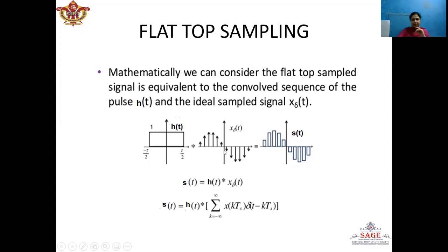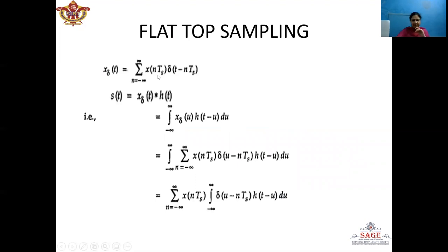Here the amplitude of the impulses varies according to the message signal. So X_delta(T) is known as the instantaneous sample signal or ideal sample signal. This ideal sample signal can be represented by the summation from N equals minus infinity to infinity of X(N·T_S) · delta(T − N·T_S), where N is an integer.